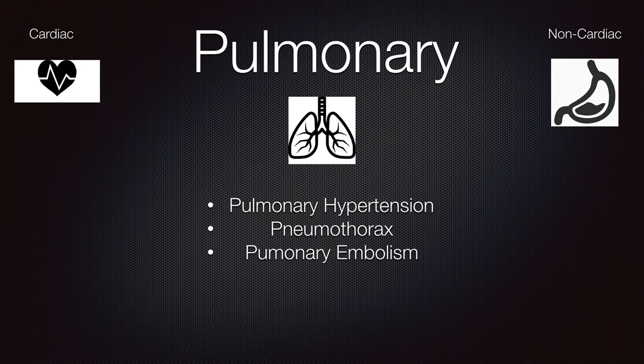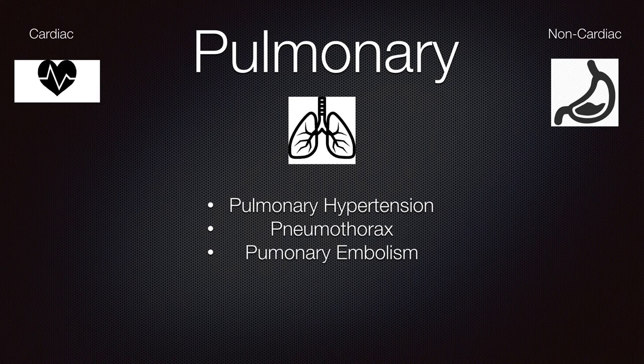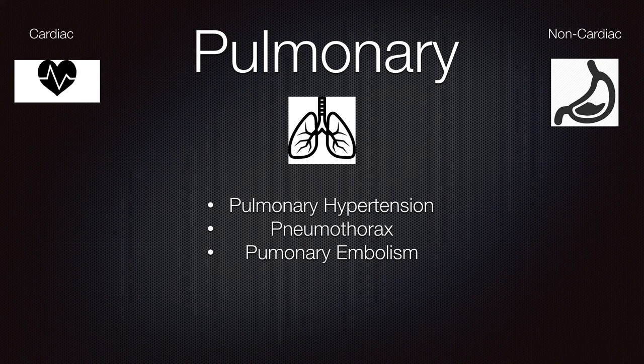Pulmonary embolism — in the question stem, patients are often found to be tachypneic, dyspneic, having difficulty breathing, with cough and pain on inspiration; it can lead to sudden death. Patients who have deep venous thromboses — those clots can be dislodged and travel to the lungs. On arterial blood gases, they are hypoxemic. EKG often shows nonspecific changes, in particular an S-wave in lead I, Q-waves in lead III, and T-wave changes in lead III.